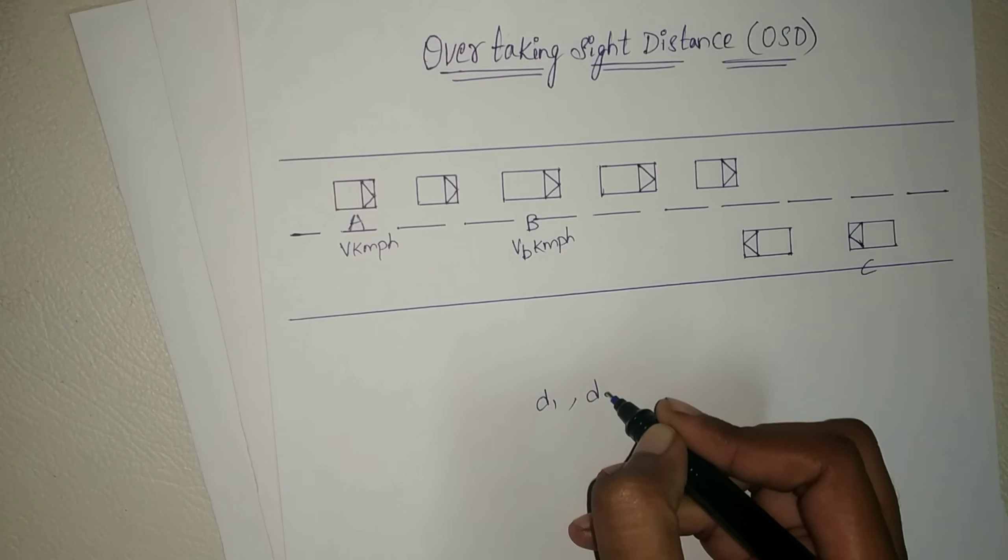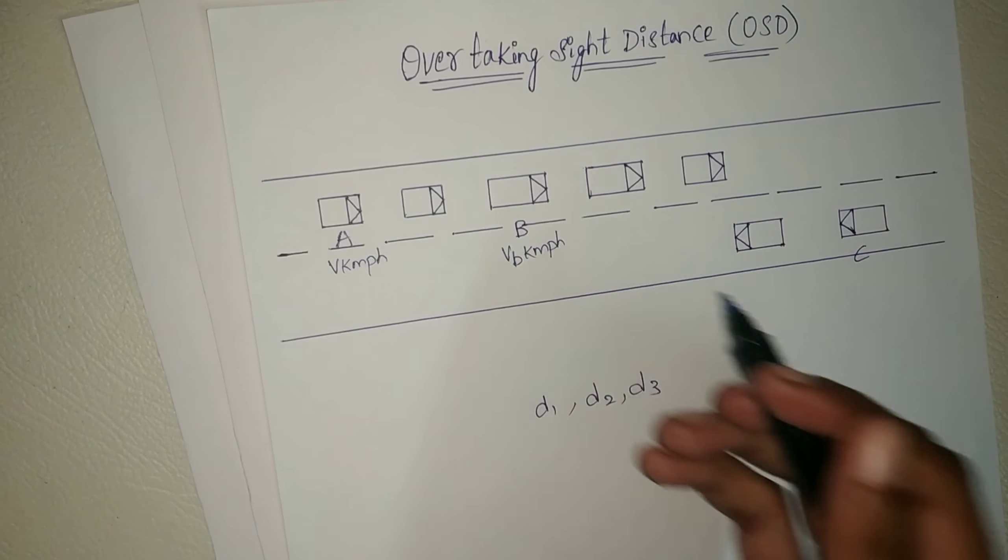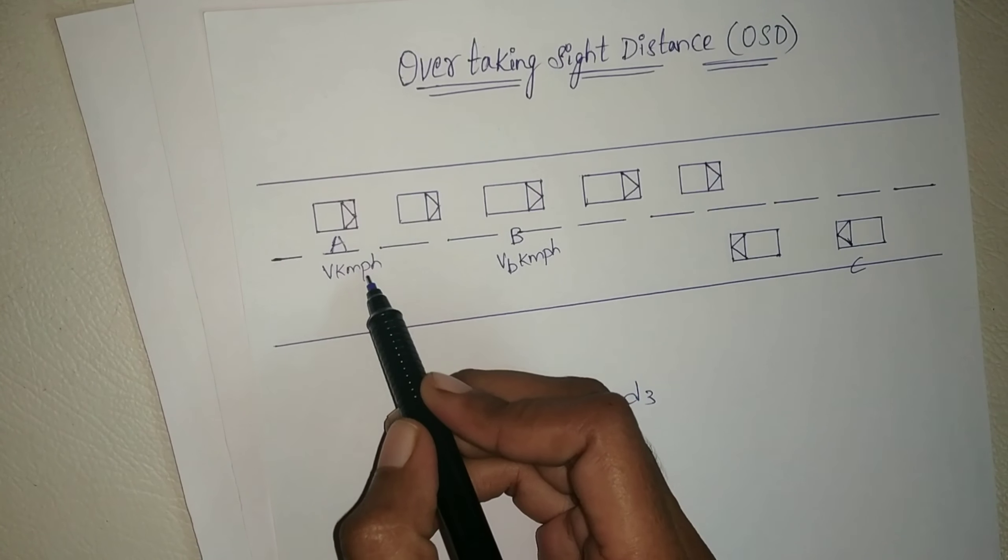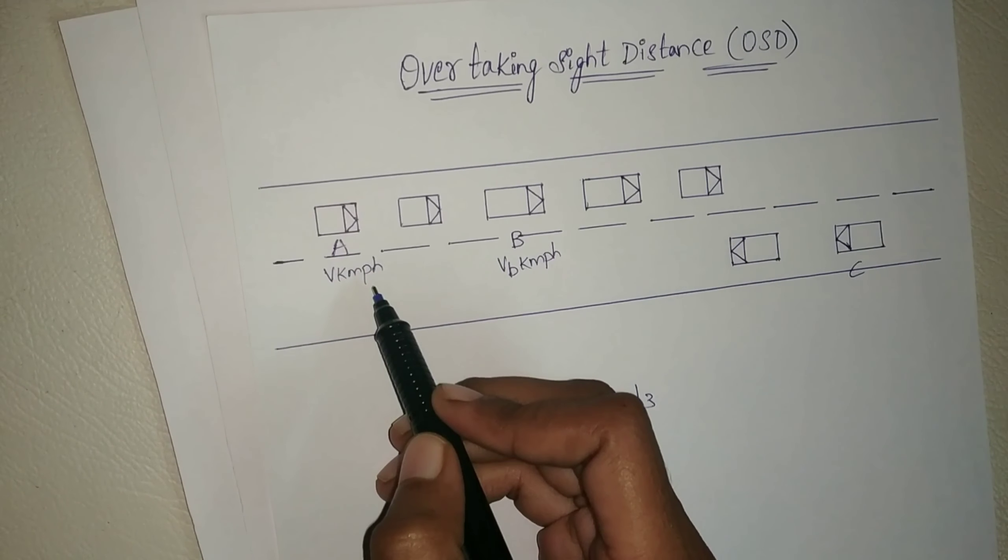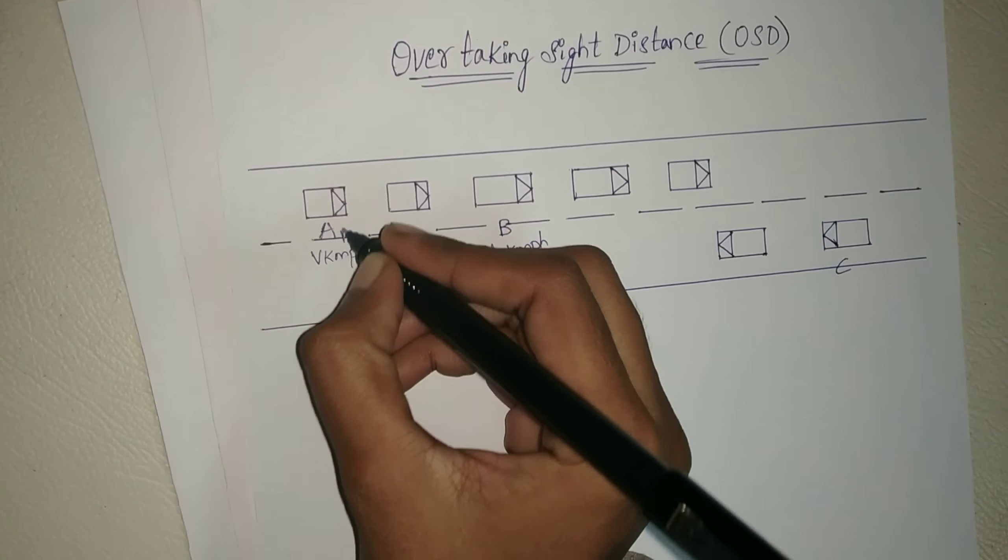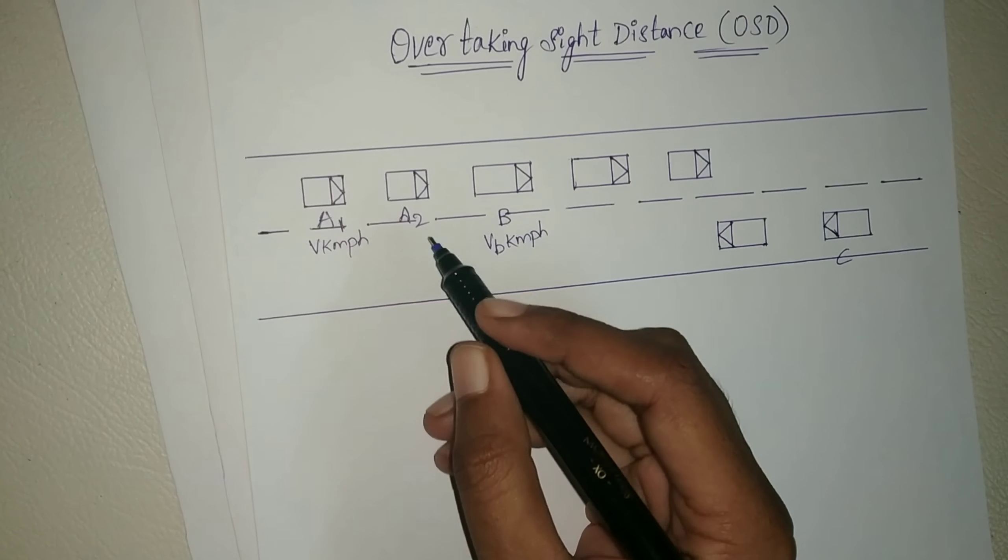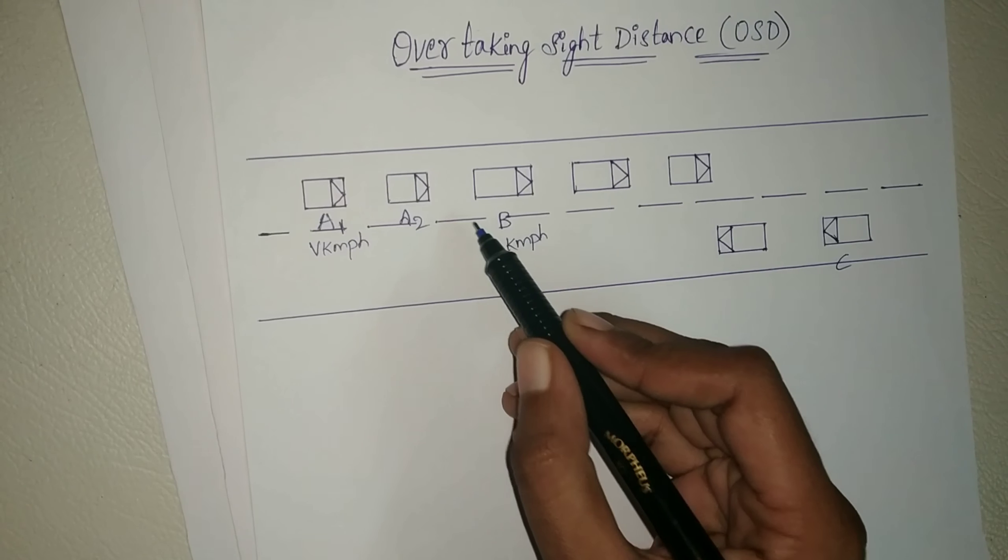That is d1, d2, and d3. d1 is distance traveled by overtaking vehicle A during the reaction time t of the driver from the position A1 to A2 before starting to overtake the slow vehicle B.